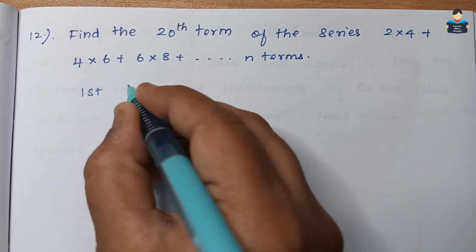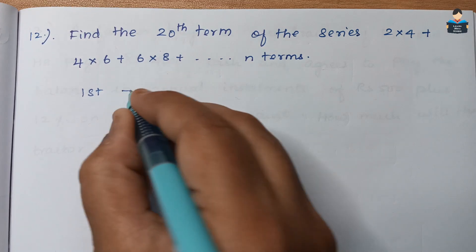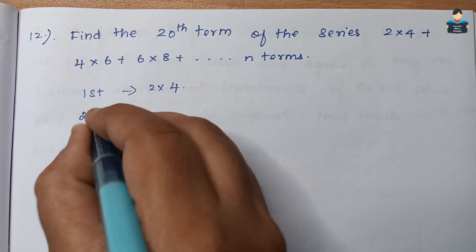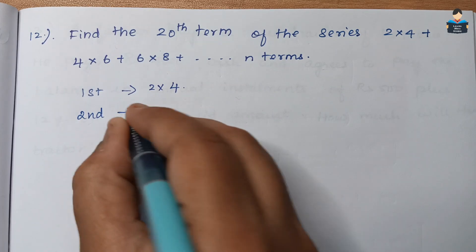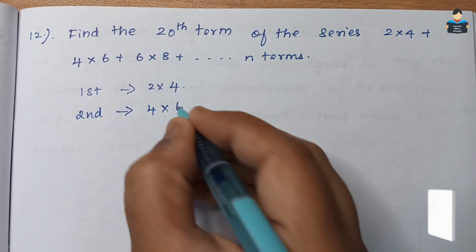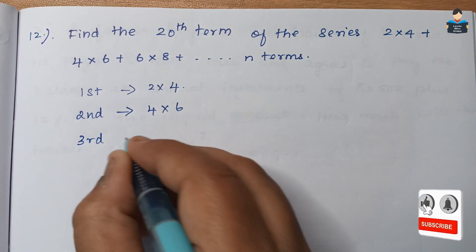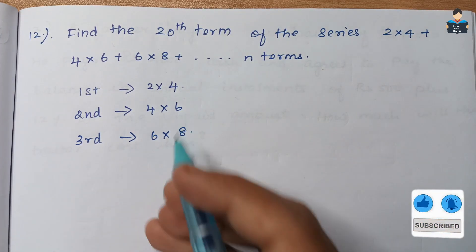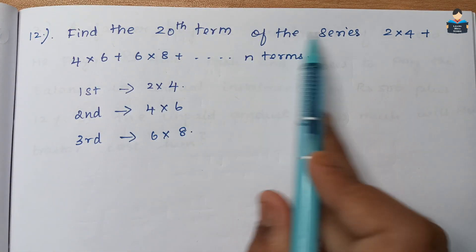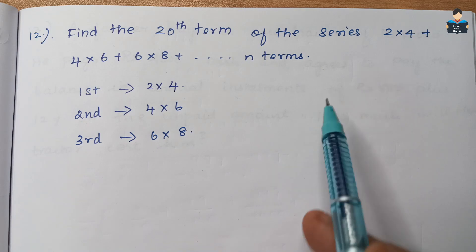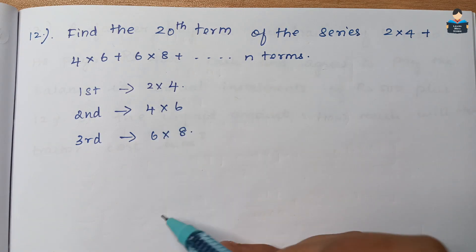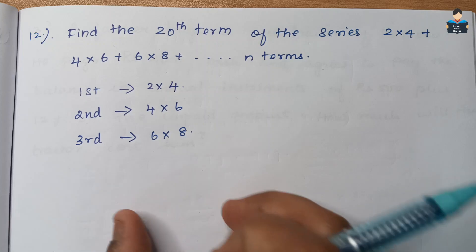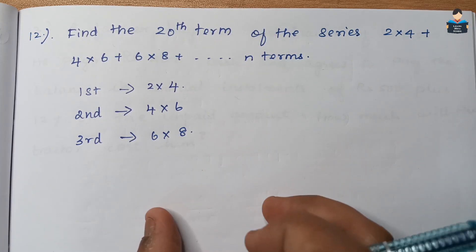The first term is 2×4, the second term is 4×6, and the third term is 6×8. We need to find the 20th term of the series, so first we find the general nth term.